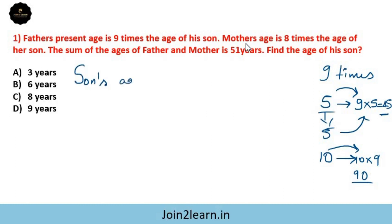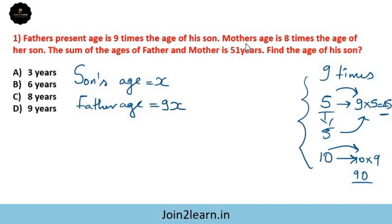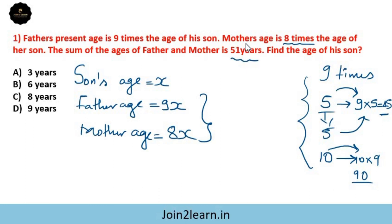Let's apply the concept. Mother's age is eight times the age of her son, so mother's age is 8x. The sum of the ages of father and mother is 51 years. Father's age is 9x and mother's age is 8x, so 9x plus 8x is equal to 51 years. 9x plus 8x gives 17x.